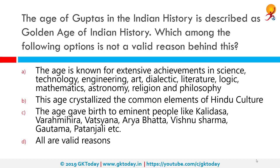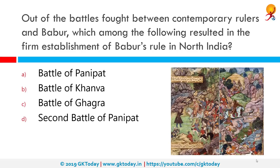The age of Guptas in Indian history is described as the golden age of Indian history. Which among the following options is not a valid reason? All are valid reasons. The Gupta period became known as the golden age of India because it was marked by extensive inventions and discoveries in science, technology, engineering, art, literature, logic, mathematics, astronomy, religion, and philosophy.